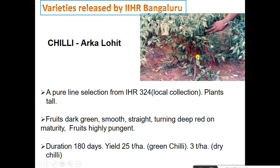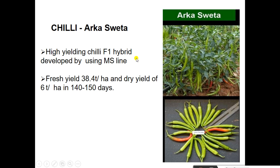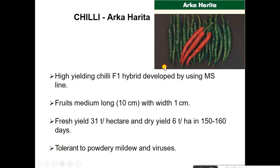See the image of cultivars and varieties. First is Arka Lohit — yield 25 tons per hectare, duration 180 days. Then Arka Harit, another cultivar of chili. Then Arka Shweta — it is a high yielding chili developed using mass selection. Fresh yield: 38.5 tons per hectare; dry yield: 6 tons per hectare; maturity duration: 140 to 150 days.